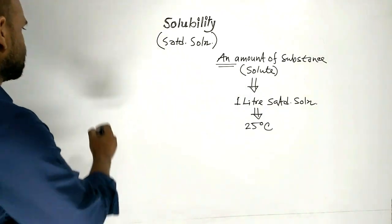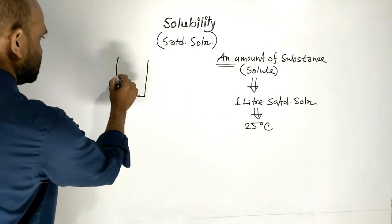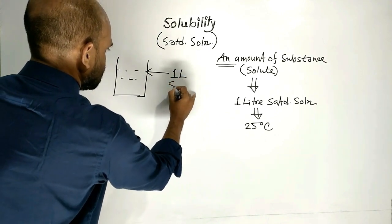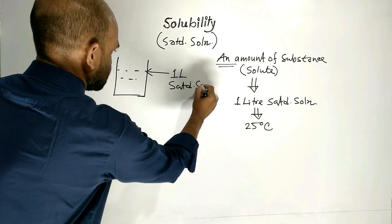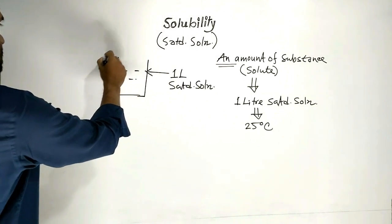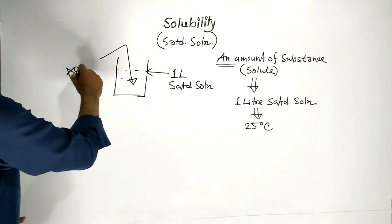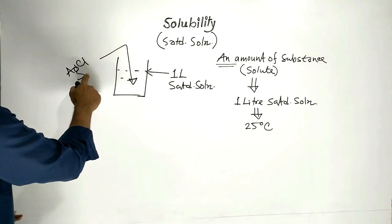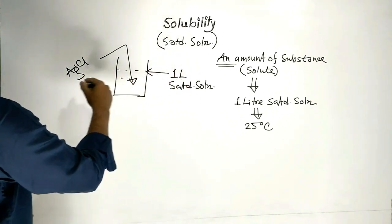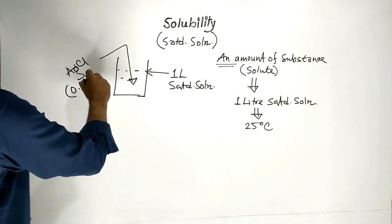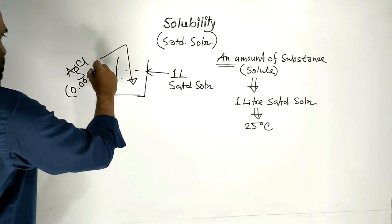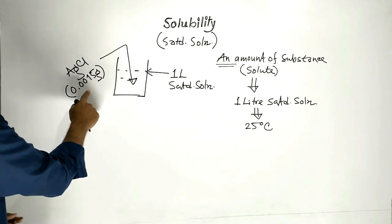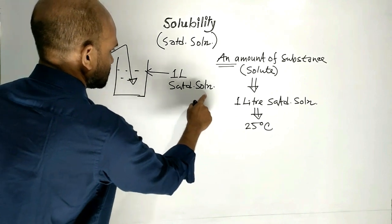Suppose this is a beaker in which one liter saturated solution is present — saturated solution of, suppose, silver chloride. This is saturated solution of silver chloride; volume is 1 liter. Here, silver chloride is 0.0015 gram. This amount of silver chloride is dissolved here to make the saturated solution.